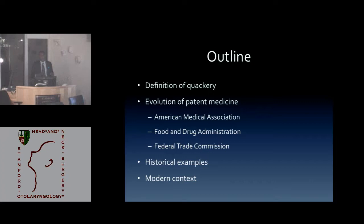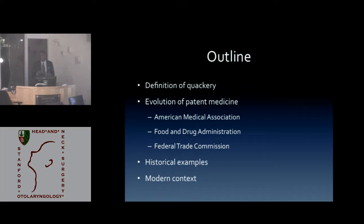We're going to talk about the evolution of patent medicine, including the roles of the AMA, FDA, and FTC involved in this. I'm going to go over some historical examples and then bring it into a modern context about why it matters. I have to thank Dr. Jackler, who guided me through this and provided a lot of resources. When I cover this topic, I'm mostly going to speak to 18th to 20th century English literature, and I'm not going to talk about alternative medicines — Eastern, traditional, African, tribal, or Native American medicines.